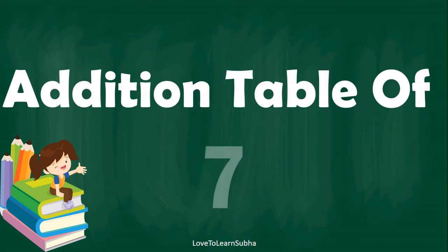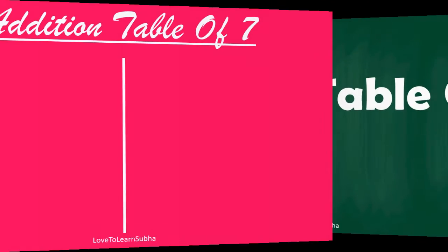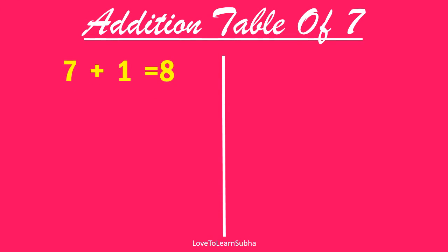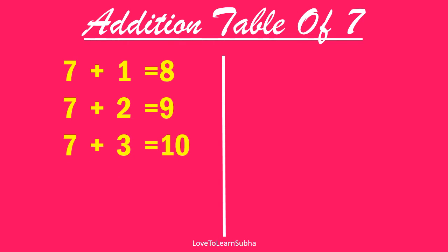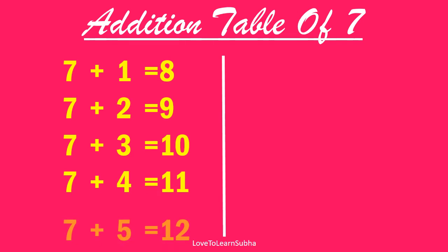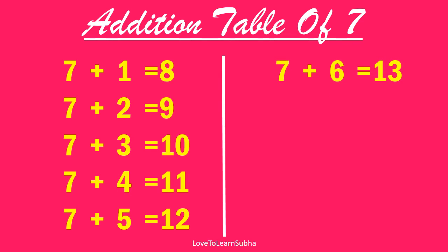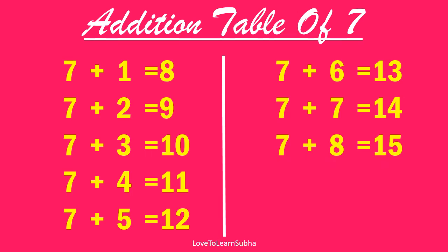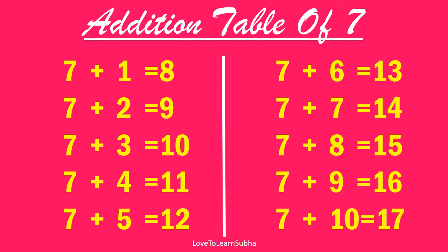Addition table of 7. 7 plus 1 equals 8. 7 plus 2 equals 9. 7 plus 3 equals 10. 7 plus 4 equals 11. 7 plus 5 equals 12. 7 plus 6 equals 13. 7 plus 7 equals 14. 7 plus 8 equals 15. 7 plus 9 equals 16. 7 plus 10 equals 17.